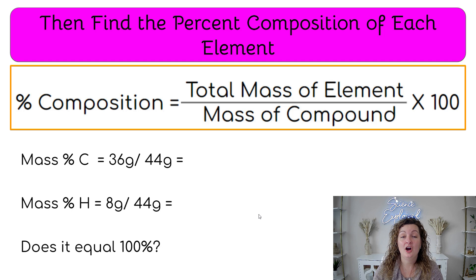Now we can go on to our percent composition formula, and we're going to do our total mass of the element divided by the mass of the compound. In other words, the molar mass, right? And then multiply it by a hundred when we're finished.